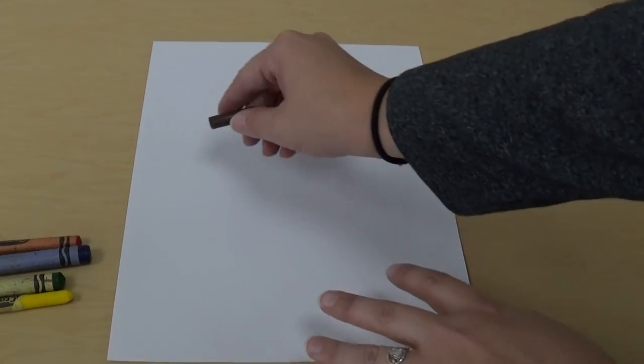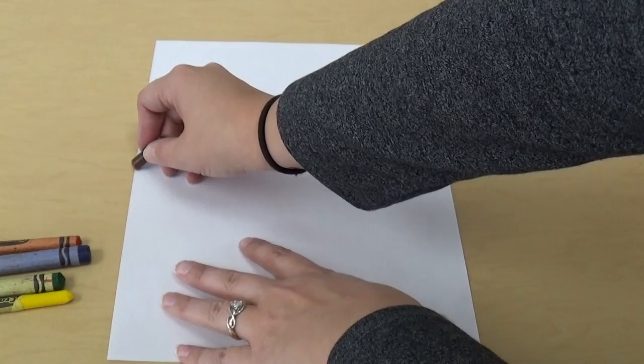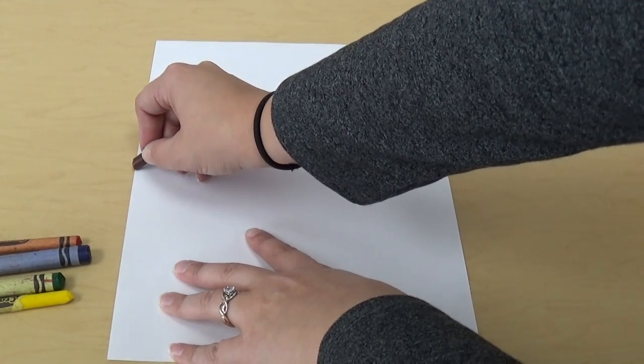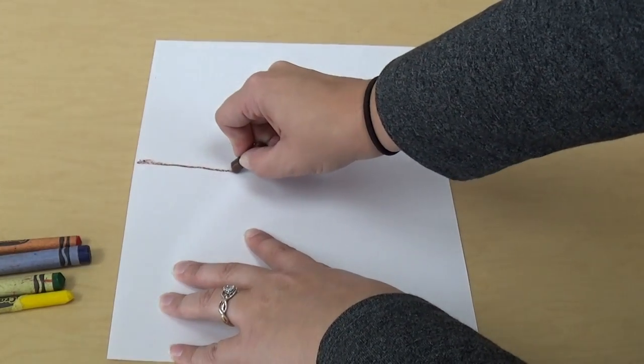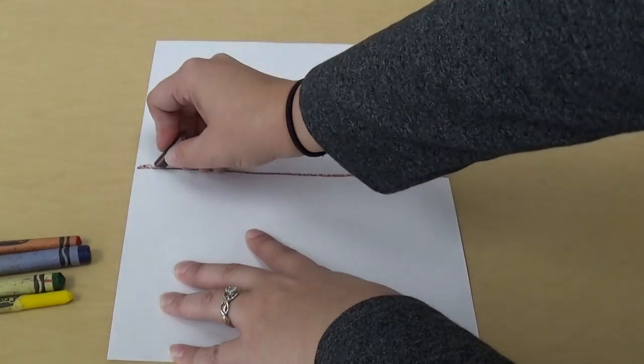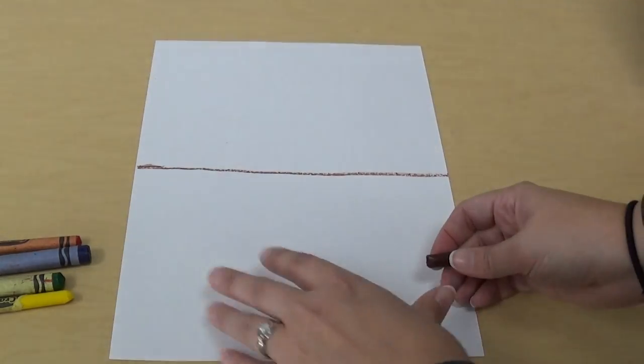All right friends, we are going to start drawing our plants with their roots. So the first thing we're going to do is draw a line for the ground, where the ground and the sky meet. It's going to go right through the middle of our paper with that brown crayon. I'm going to press nice and hard, just like that.